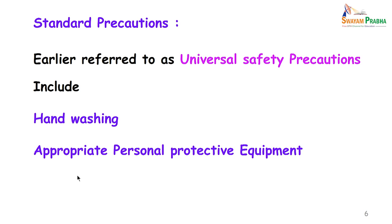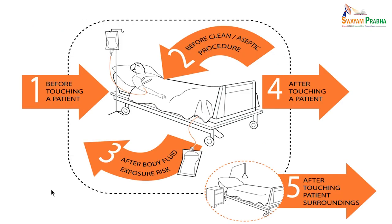Standard precautions, earlier called universal safety precautions, involve hand hygiene and wearing appropriate personal protective equipment. The 5 moments of hand hygiene are: before touching a patient, before clean and aseptic procedures, after body fluid exposure risk, after touching a patient, and after touching patient surroundings.